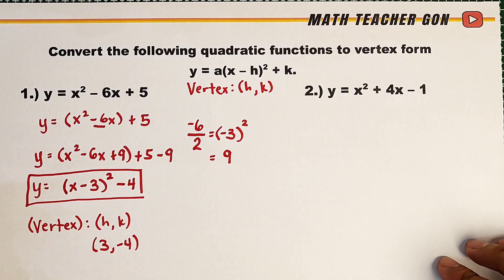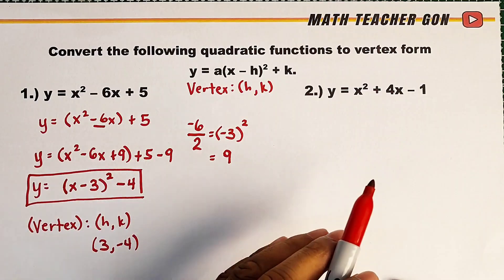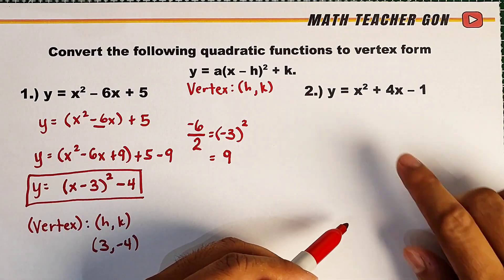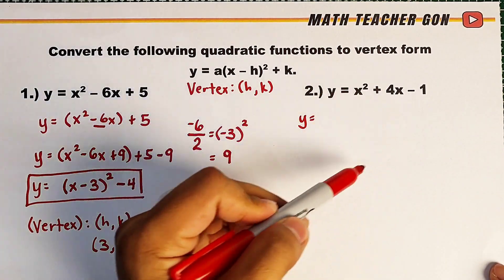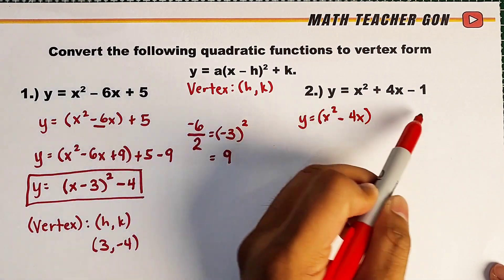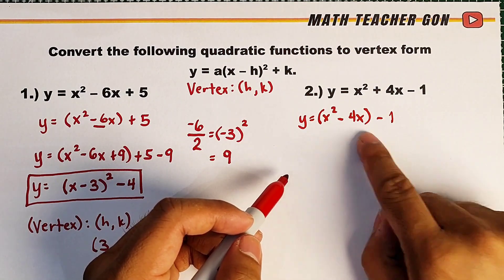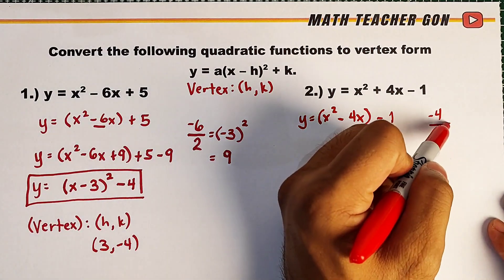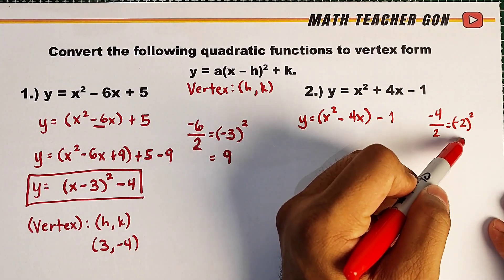Now let's continue with item number 2. Same process — you can pause the video if you want to try answering number 2. For this one, copy your y and then regroup the terms to be x squared minus 4x minus 1. Now let's complete the square. Get negative 4, divide it by 2. The answer is negative 2. Square it and the correct answer is 4.